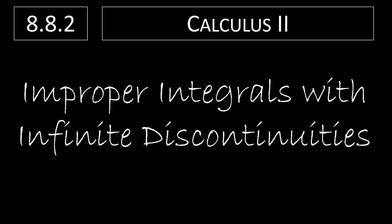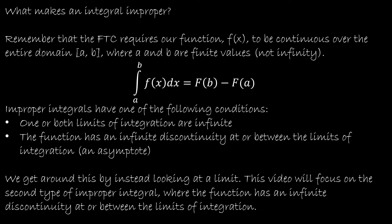In this video we're going to focus on improper integrals that have infinite discontinuities or asymptotes at either of the endpoints of the interval or in the center. Again, there are two ways to have an improper integral. In our last video we focused on what happens when one or both of the limits of integration are infinite, because in order to use the fundamental theorem of calculus we need a continuous function and finite limits of integration. In this video we are going to focus on infinite discontinuities — either a discontinuity or asymptote at the lower limit of integration, the upper limit of integration, or somewhere in between.